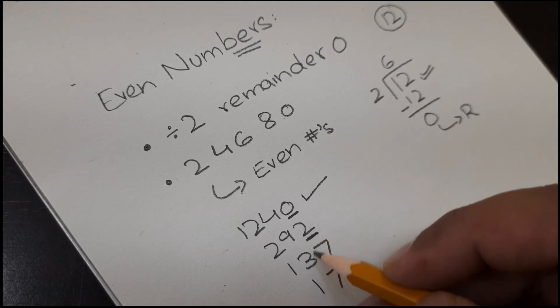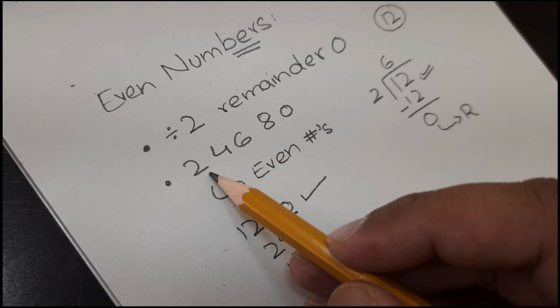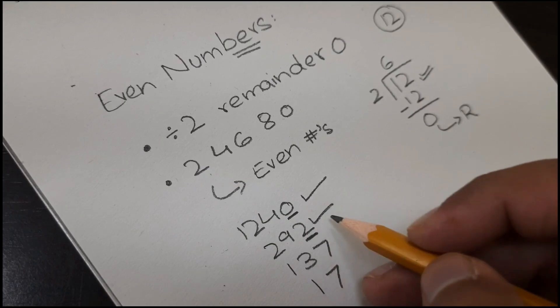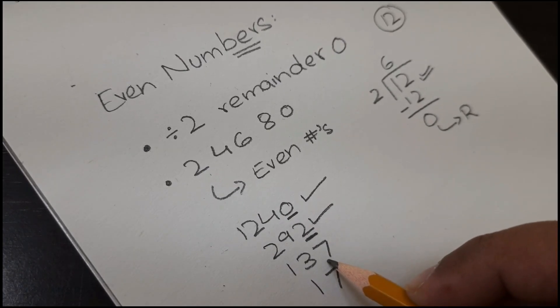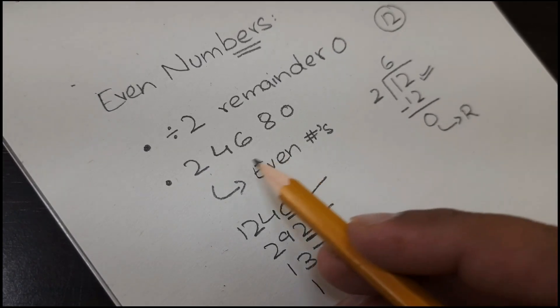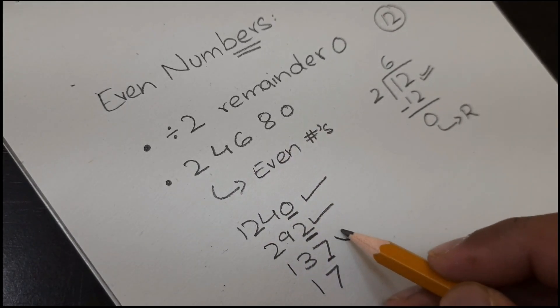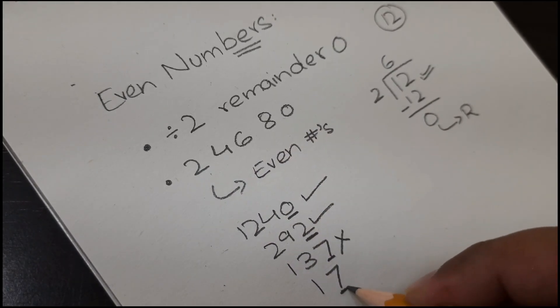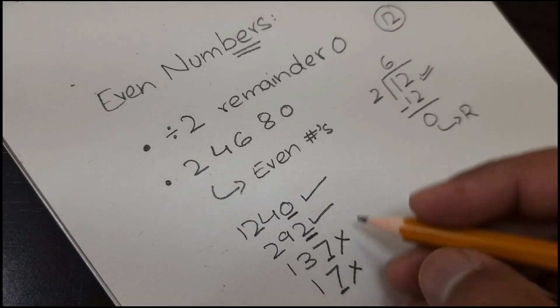For 292, the last digit is 2. Yes, 2 is even, so this is also even. For 137, the last digit is 7. There is no 7 in our list, so it is not an even number. For 17, we again have 7, so it is not an even number.